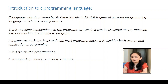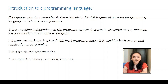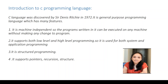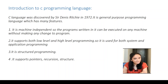A computer is an electronic device which understands the instructions in the form of 0 and 1, that is binary or machine language. So whatever programming language we choose gets internally translated into machine language by a program called a translator. The computer then understands the instructions and gives us the meaningful result.